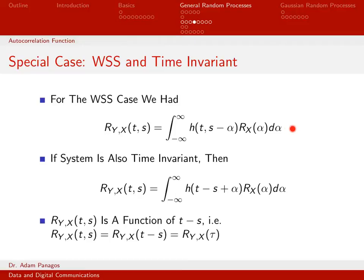What happens between this line and this line? Since our system is now time-invariant, we no longer have a two-dimensional impulse response — we have a one-dimensional impulse response. So instead of t comma s minus alpha, we can replace that with t minus the quantity s minus alpha, which turns into t minus s plus alpha. Note that this cross-correlation function, written as a function of t and s, now only contains t and s as t minus s.